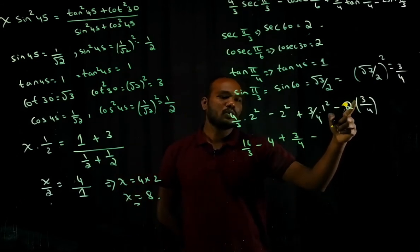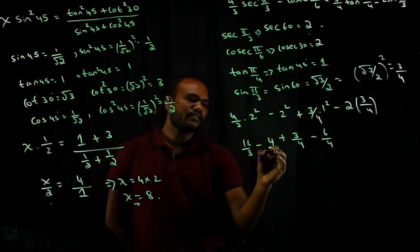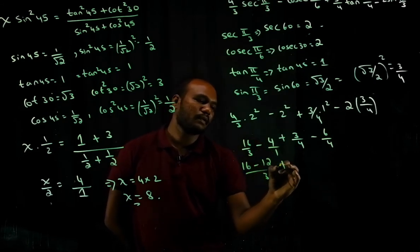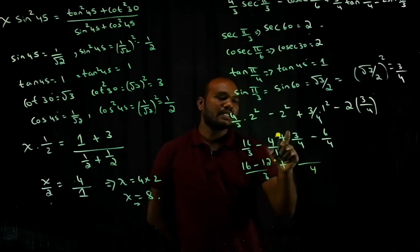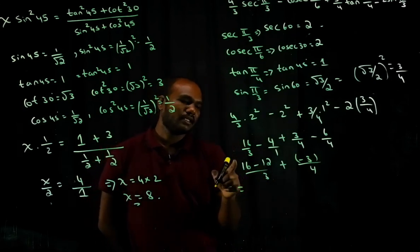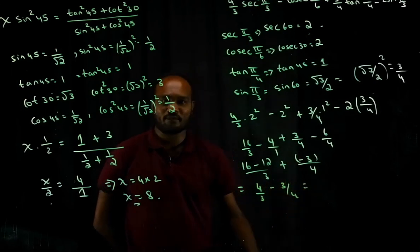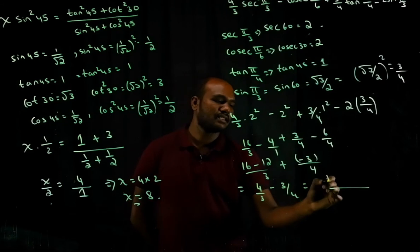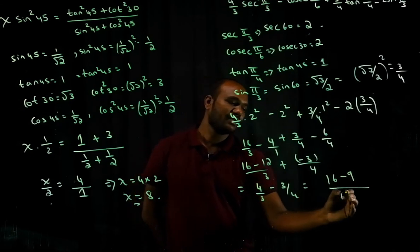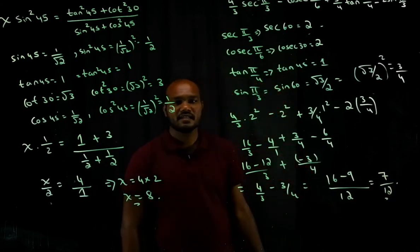Solving further: 16/3 minus 12/3 = 4/3, and 3/4 minus 6/4 = -3/4. Taking LCM of 3 and 4 gives 12: (16 - 9)/12 = 7/12. The final answer is 7/12.